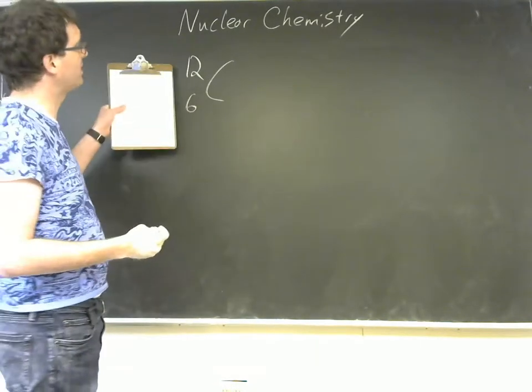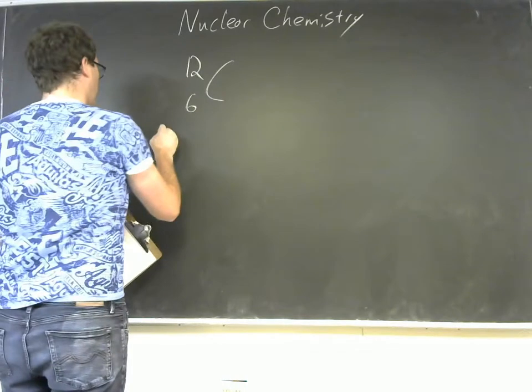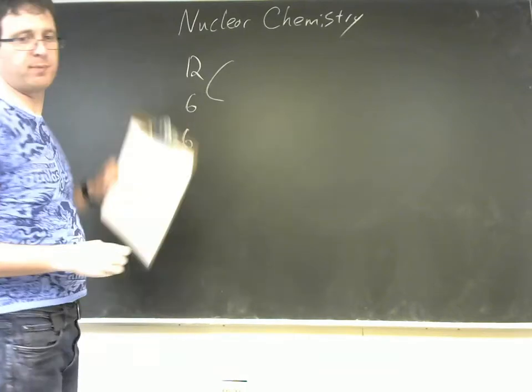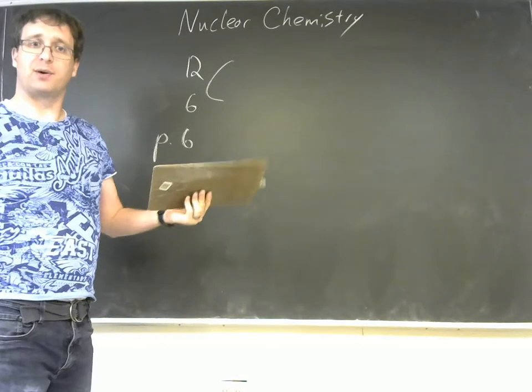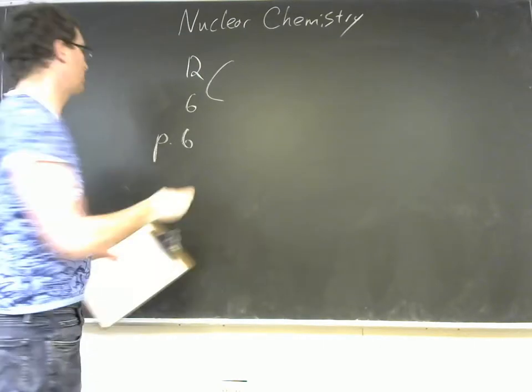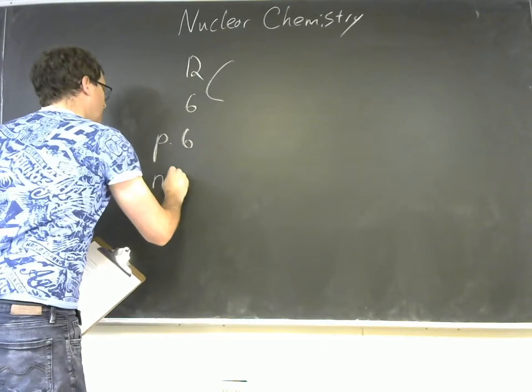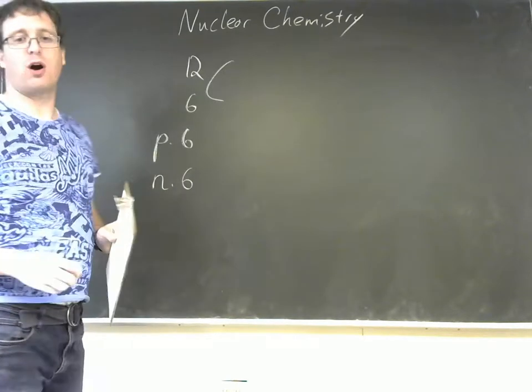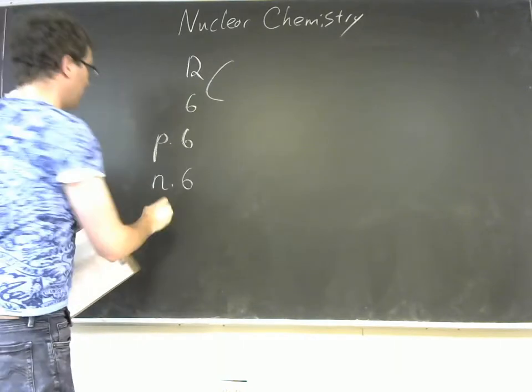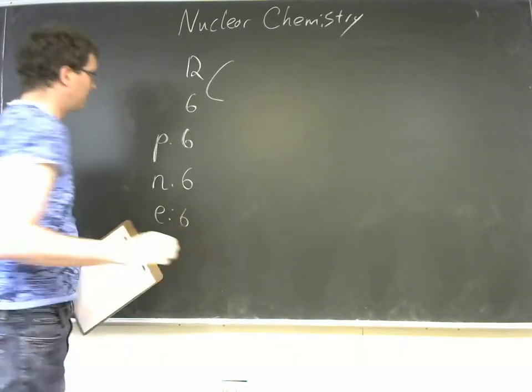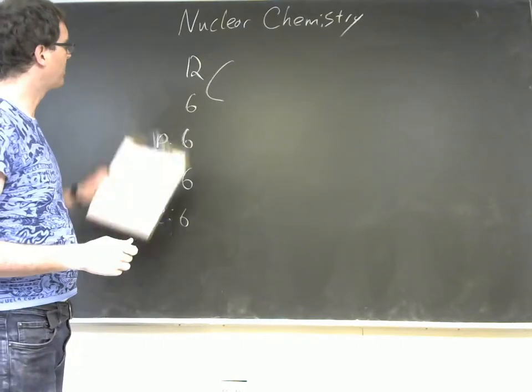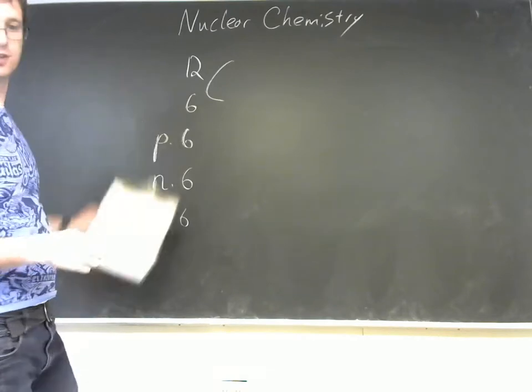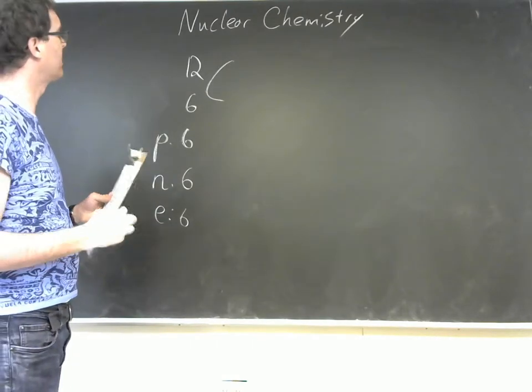So this lower left number here means that there are 6 protons. The upper number there, 12, means that the mass number is 12. That's the sum of protons and neutrons. So that would be 6 neutrons. And then the fact that there's no charge means that we've got equal numbers of electrons and protons. So that would be 6 electrons. That makes carbon-12 a devilishly simple atom because it's got 6 of everything.